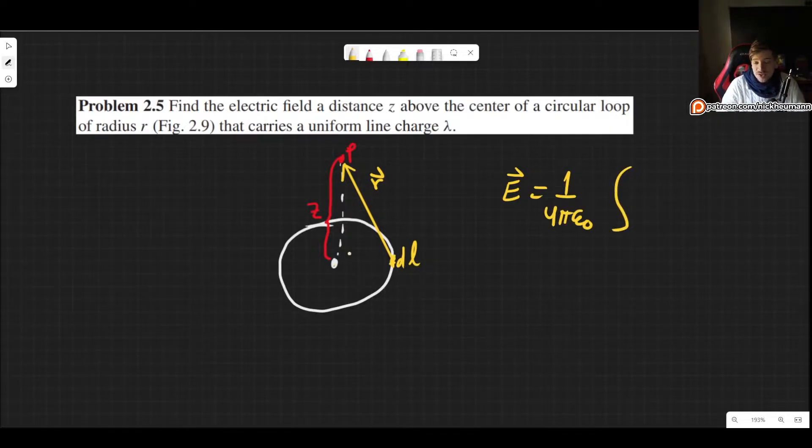So what we want to do is take each little segment of line dl and find the vector r that lets us find the contribution from the electric field, and then we actually calculate it. The formula for the electric field, since this is a charge distribution, we have to use the integral form: E equals 1 over 4πε₀ integral of λ r-hat divided by |r|² dl.